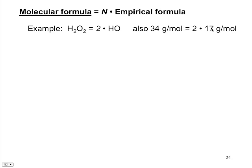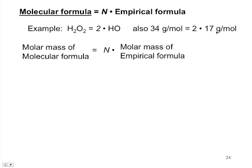So we can deduce this new relationship, which is that the molar mass of a molecular formula is going to be equal to some integer times the molar mass of our empirical formula. And so our integer, in the case of hydrogen peroxide, is 2.